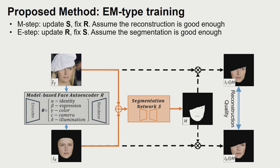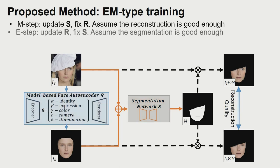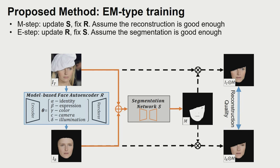When training the segmentation network, the parameters of the face autoencoder are fixed, and only the segmentation network is optimized. Similarly, when training the face autoencoder, we continue to optimize its parameters while keeping the segmentation network fixed.